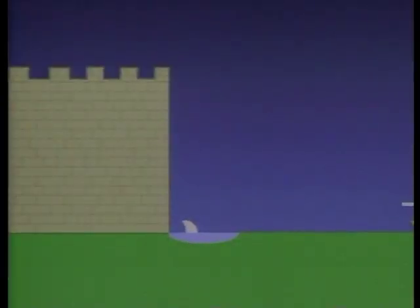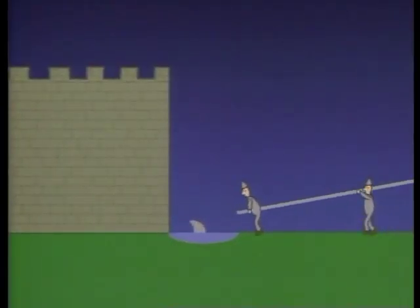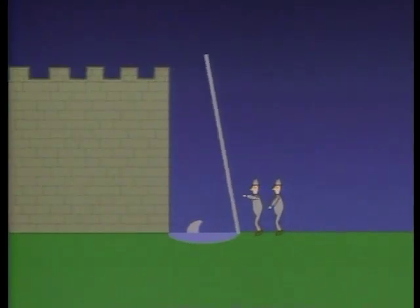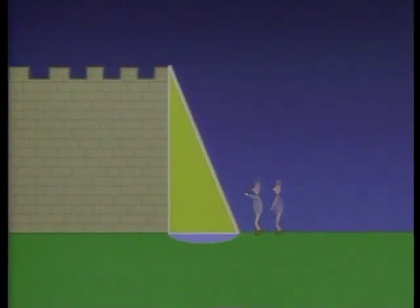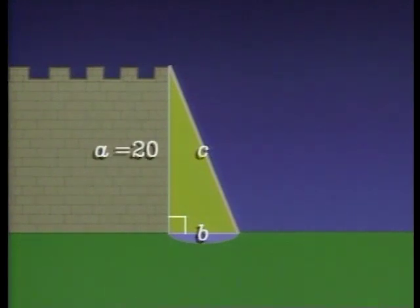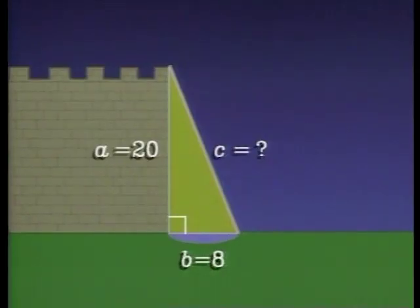In this situation, ladders are used to form right triangles. Suppose we know the height of the wall and the width of the moat. How long should the ladder be to reach the top of the wall?